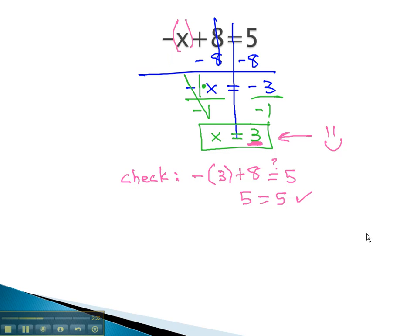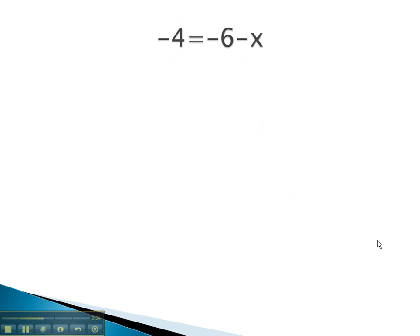Let's try one more. In this problem, we have negative 4 equals negative 6 minus x. As usual, we'll balance through the equal sign. We want to get the x alone, this time on the right side. We have to get rid of that stand-alone number first, those 6 negatives first. And we get rid of those 6 negatives with 6 positives on both sides.